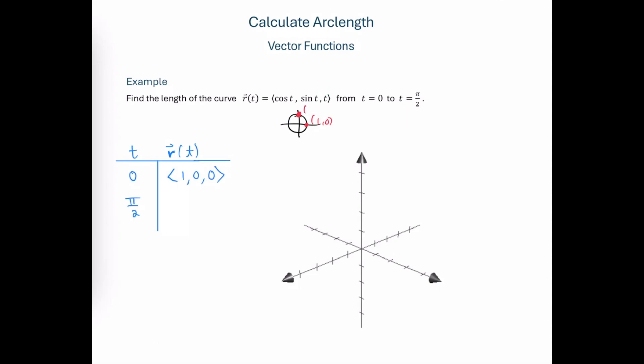And when t is equal to π over 2, we're going to have the cosine of π over 2, which is 0. The sine of π over 2 is 1, and then π over 2 in for the value of the parameter is just going to be π over 2.